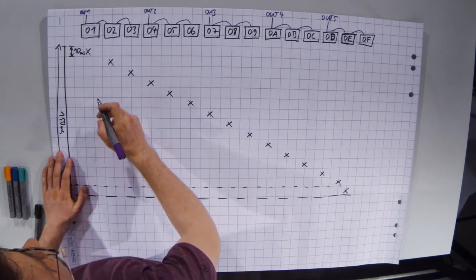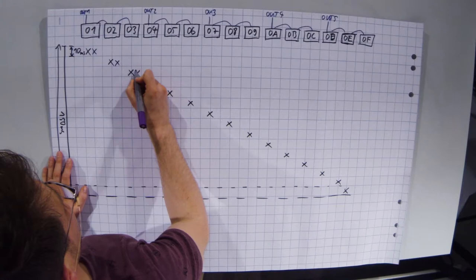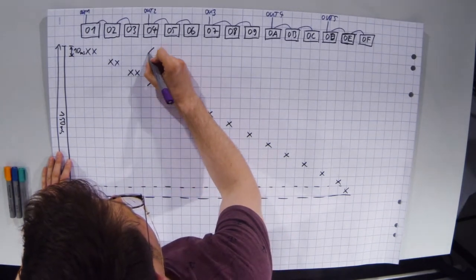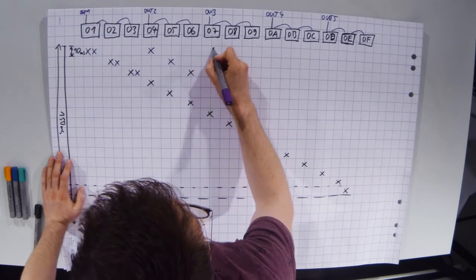So the output number 1 only has to send out to 0-1, 0-2 and 0-3. And output number 2 only has to send out to 0-4, 0-5 and 0-6. And of course, this is true for all the rest of them.